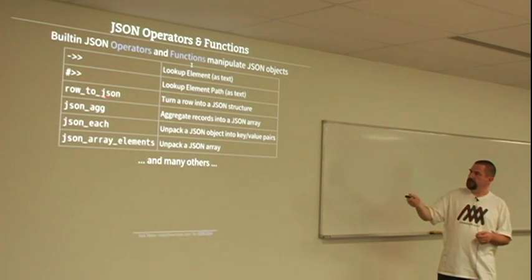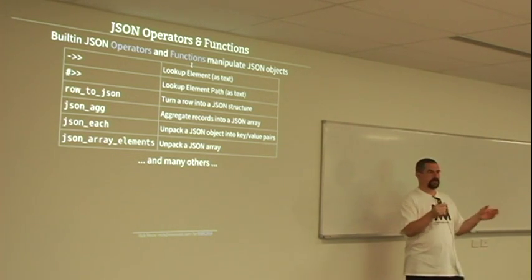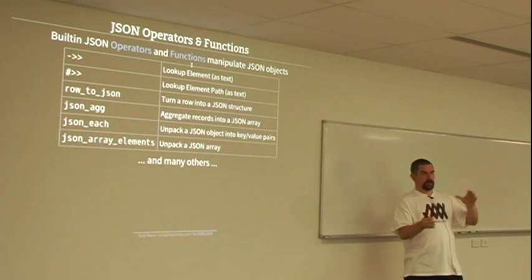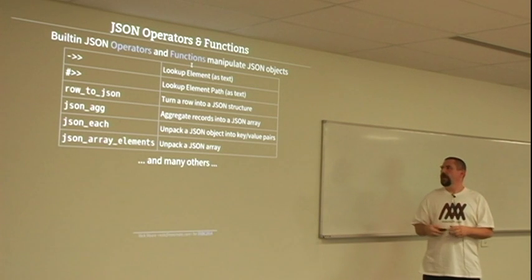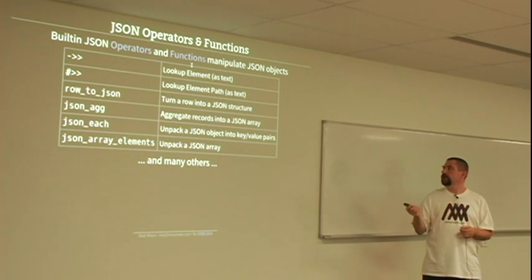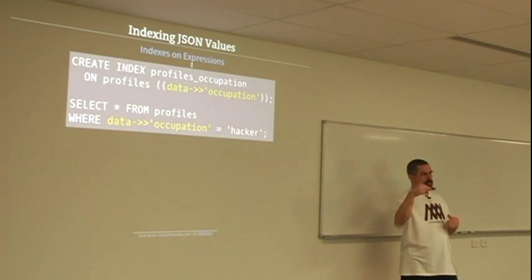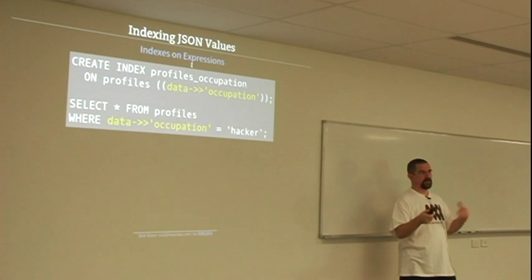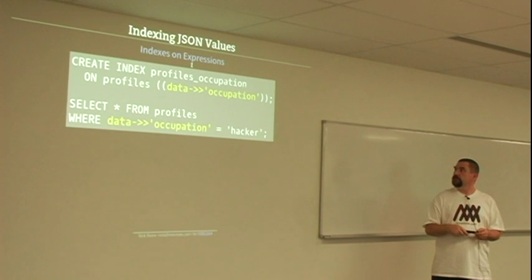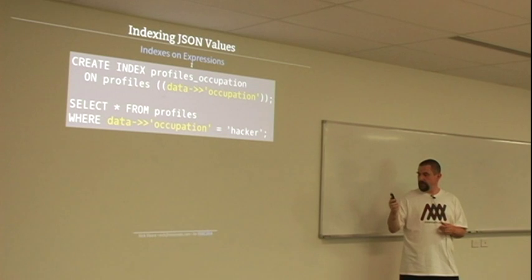There are various other functions that let you convert whole rows to a JSON document, convert an array of rows into a JSON array, and so on — very handy ways to manipulate these documents. It would be very, very slow if you had to do a table scan and run this function on every single row in order to find a query. So thankfully, Postgres lets you do indexes on expressions.